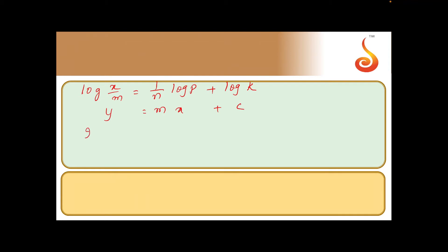The intercept which is log k is given as 0.301. This implies k is equal to antilog of 0.301 and that will be 2. So it is equal to 2.